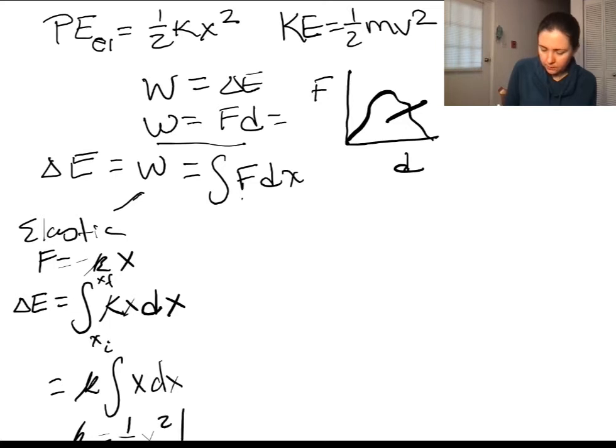Evaluated from x initial to x final, which gives us this equation that we had before, 1/2 kx squared. We would get the change in that energy, but let's say the initial energy is zero. Then we would just end up with the final energy being 1/2 kx squared, because we can't forget that k out front.